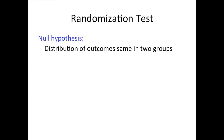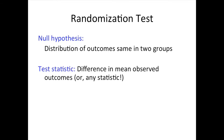We can use any test statistic we want — any summary of the data. When we talked about the Lady Tasting Tea, we talked about the number of cups she got correct. With this legal example, we might use as a test statistic the difference in win rates between those offered help and those not offered help. That would be an example of a test statistic we could use.